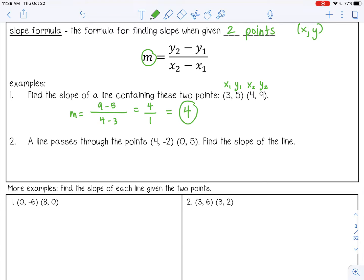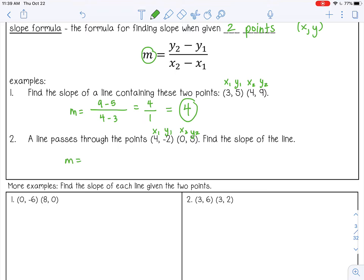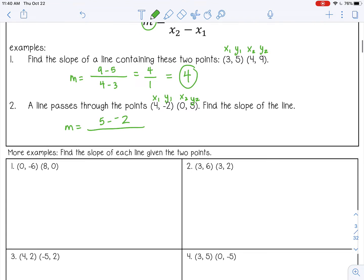Number two, a line that passes through the points 4, negative 2 and 0, 5. And we want to find the slope of that line. So same thing. This is x1, y1, x2, y2. So y2 minus y1, and be careful because we have 5 minus a negative 2, which you probably know is the same thing as 5 plus 2 if you want to change it. And then x sub 2 minus x sub 1.